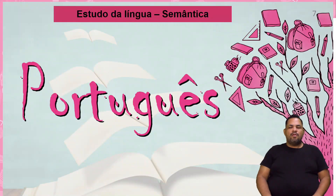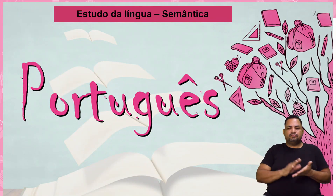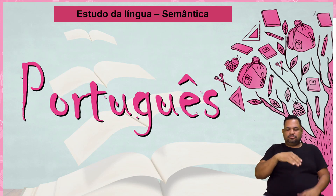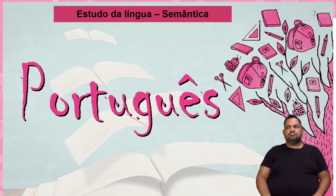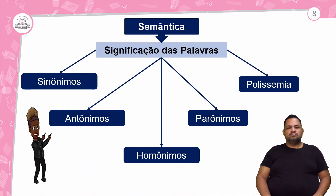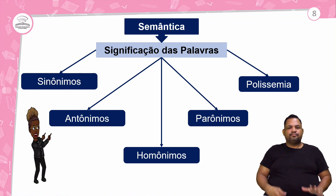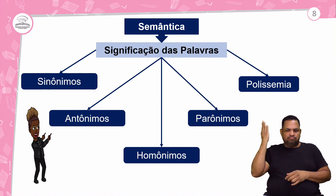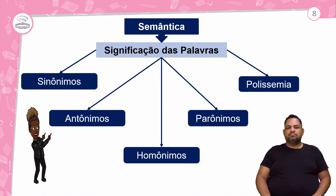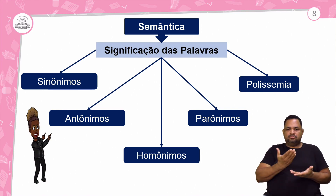Chegando ao estudo da língua que é a semântica, que traz a nossa árvore do conhecimento. Você já ouviu falar de semântica? Semântica: sentido, significado. O que é semântica? É responsável pela significação das palavras. Na semântica, nós vamos ter os sinônimos, os antônimos, homônimos, parônimos e polissemia. Nesta aula, vamos ver um a um.